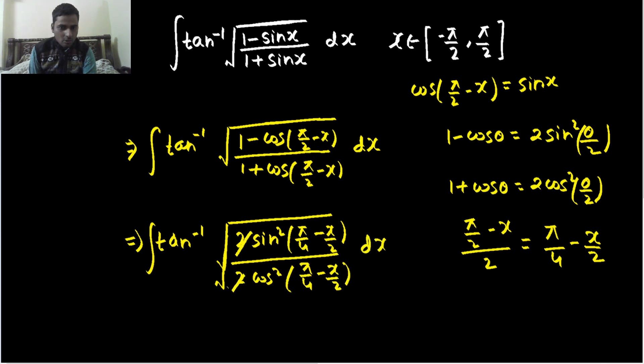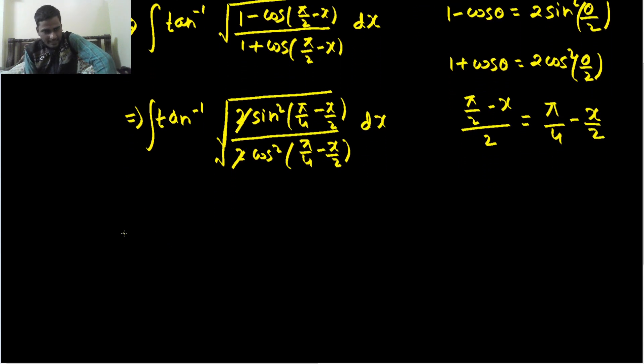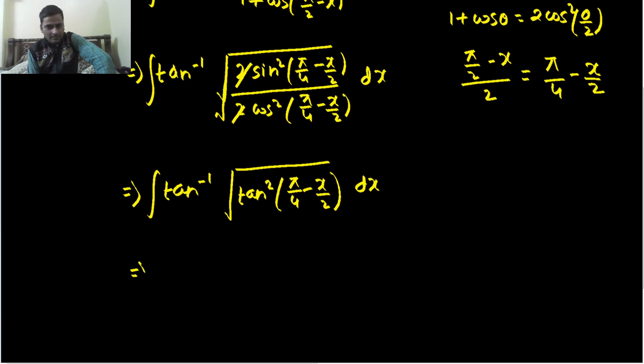Then dx. 2 gets cancelled. Sine squared by cos squared is tan squared. Again, square and root can cancel each other out, and we are left with tan inverse of tan(π/4 - x/2) dx.